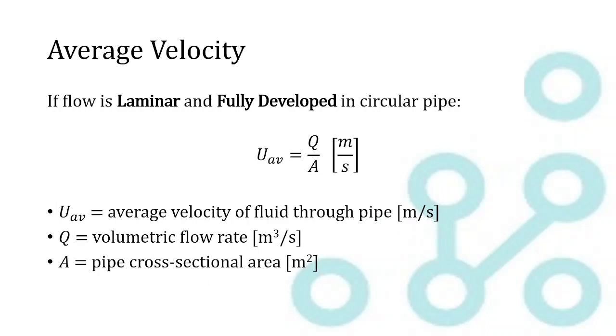The next equation is average velocity. So again, if the flow is laminar and fully developed, you can calculate average velocity as your volumetric flow rate divided by the cross-sectional area. This is a pretty easy equation. The units check out: meters cubed per second divided by meters squared gives you meters per second. So if you're trying to remember this formula, just remember how the units work out.